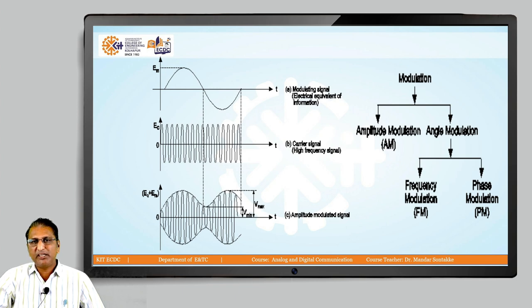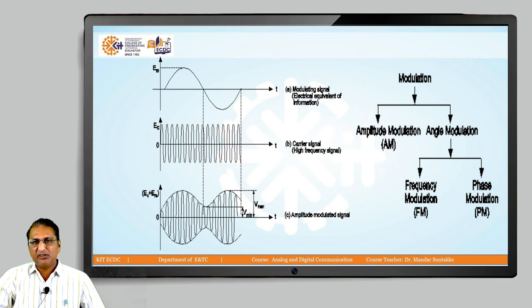In modulation, when we change only the amplitude of the modulating signal while keeping frequency and phase constant, it is called amplitude modulation. When we change the frequency of the carrier while keeping amplitude and phase constant, it is called frequency modulation. When we change the phase of the carrier while keeping amplitude and frequency constant, it is called phase modulation.